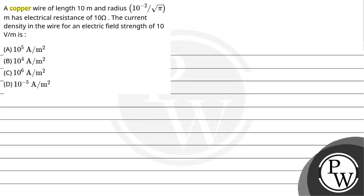Number two. Let's read the question. A copper wire of length 10 meter and radius 10 to the power minus 2 upon under root pi meter has electrical resistance of 10 ohm. The current density in the wire for electric field strength of 10 volt per meter is: